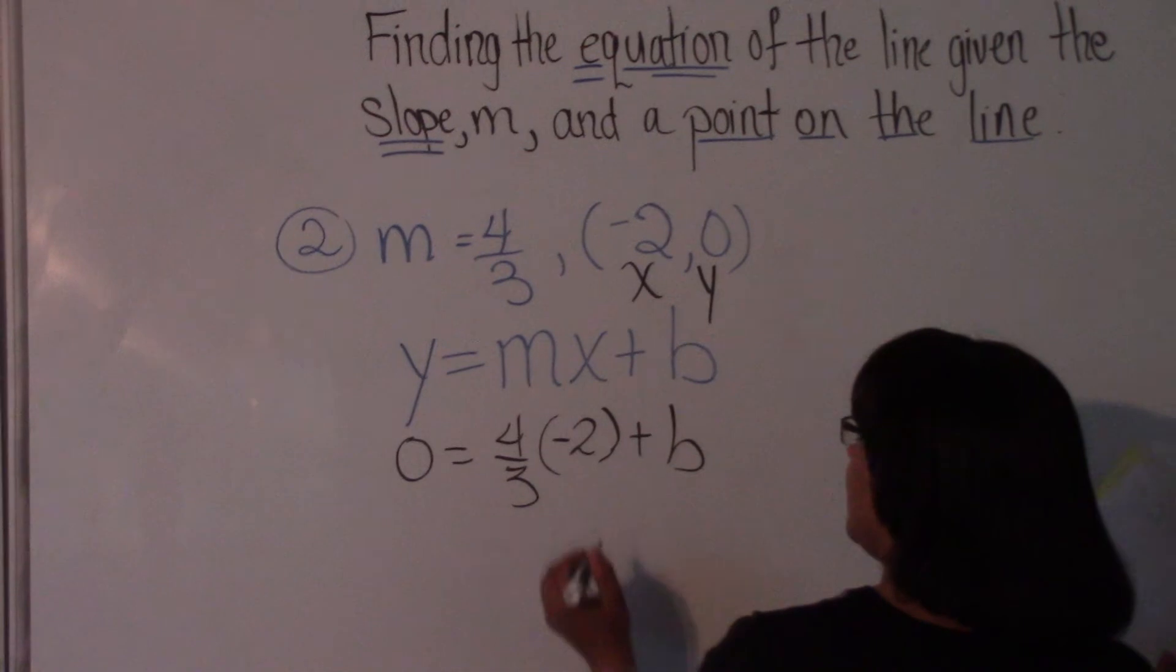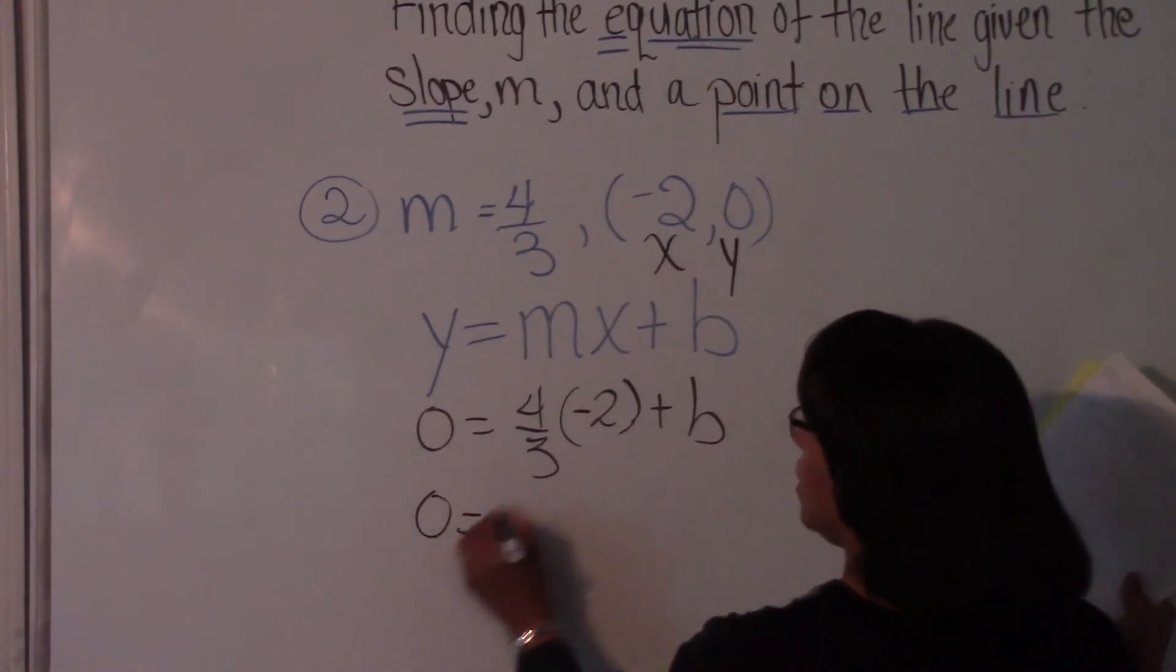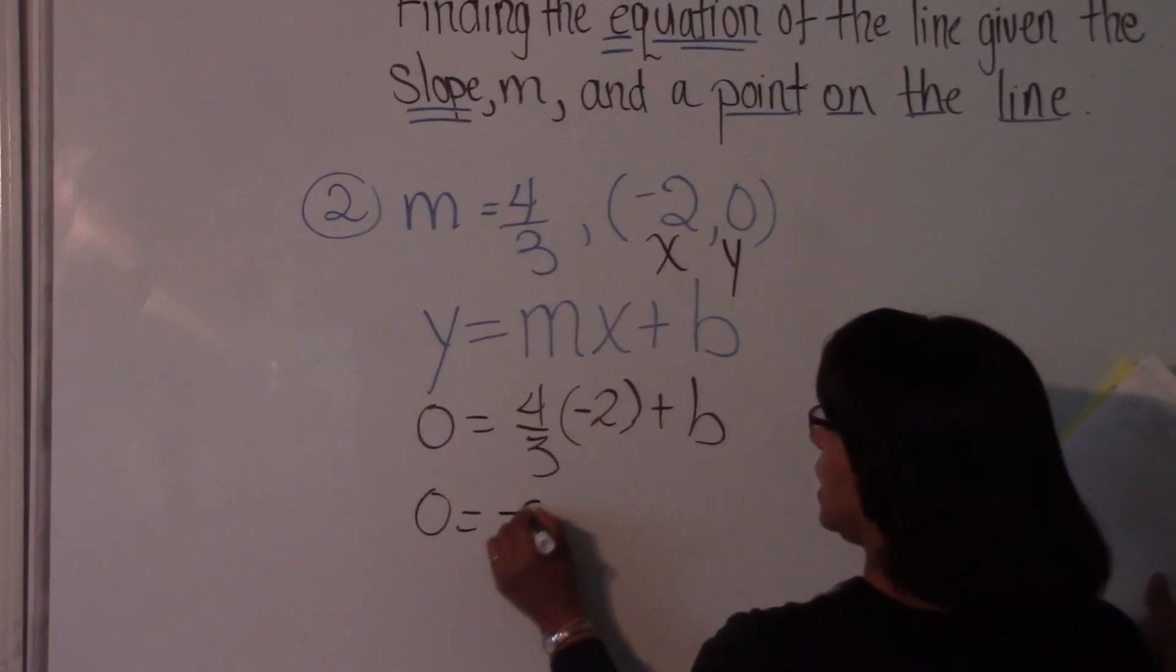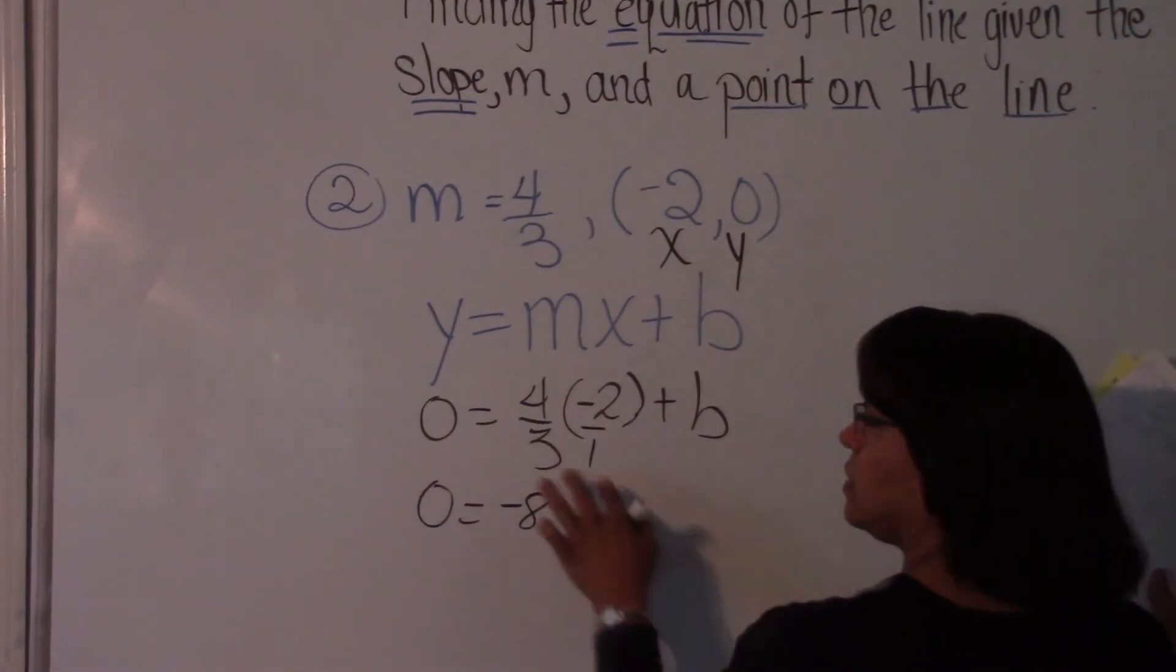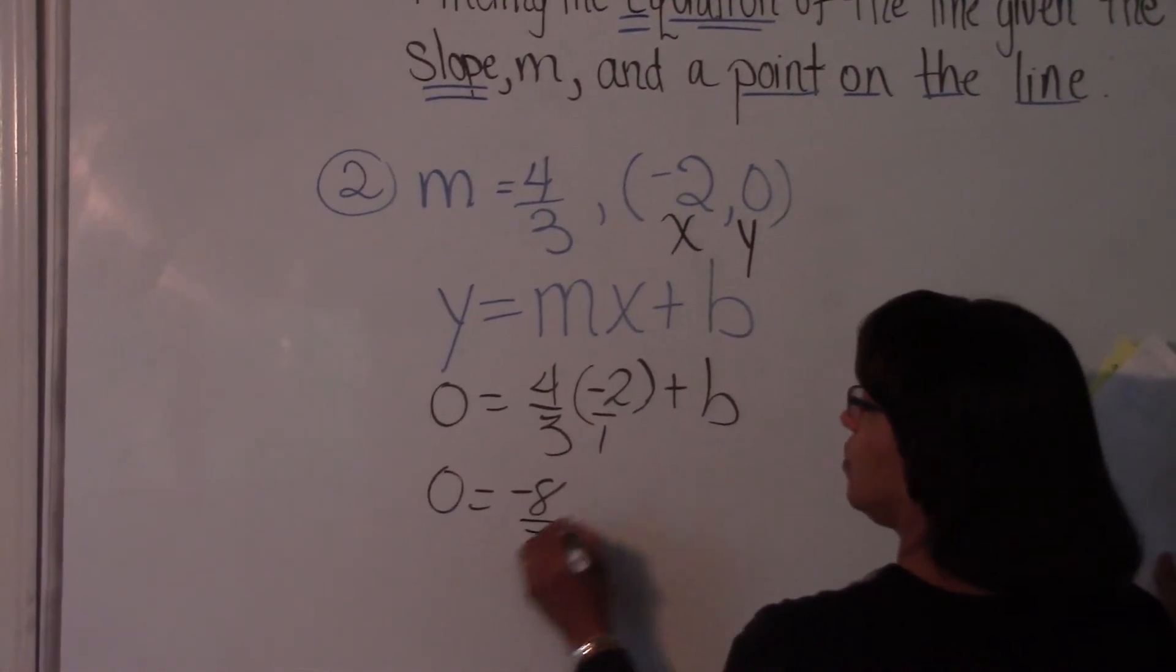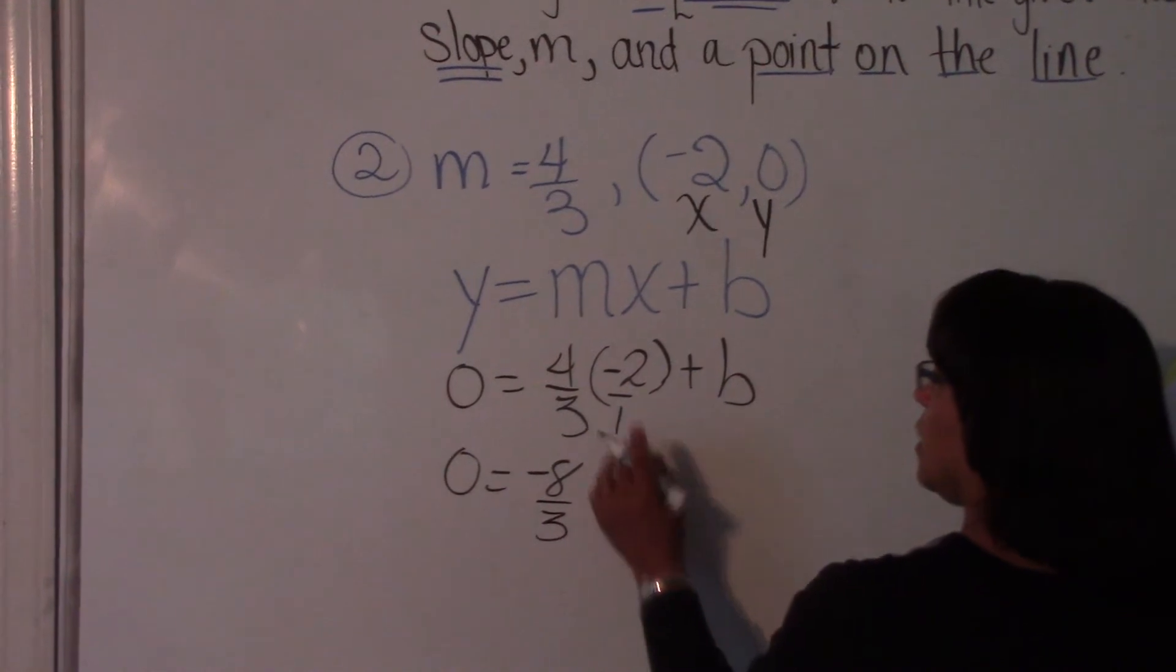So now we have that. We go ahead and multiply. 4 times negative 2 is negative 8. And that's the same as negative 2 over 1. So we do 3 times 1, and that's 3.